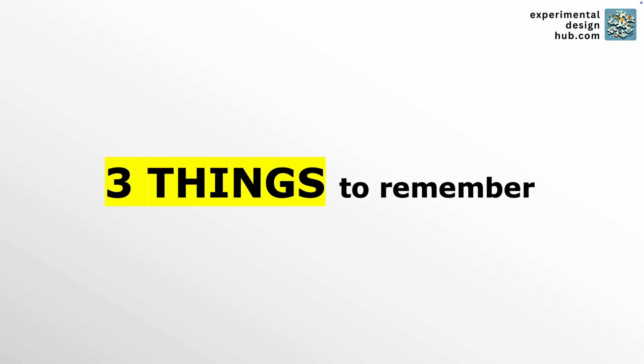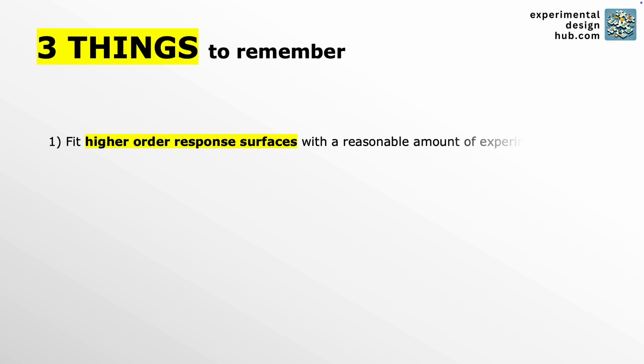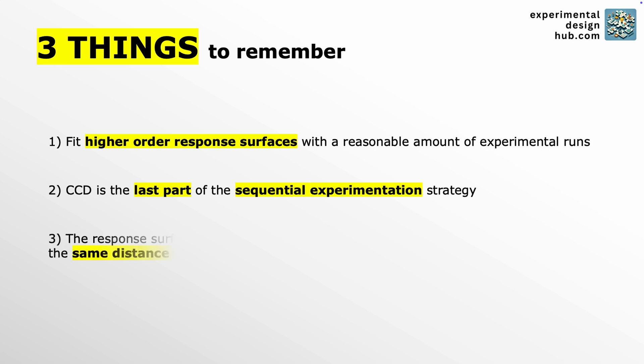Alright, three things to remember from this rather short video about central composite design. First, a central composite design allows you to fit quadratic or cubic response surfaces with significantly less experimental runs as in any three-level factorial design. Second, you never start with a central composite design, but get there eventually after a sequence of other experimental designs that you used before, but did not get a satisfactory fit of your response surface. And third, the distance of the axial points from the center of the design should be chosen that all the design points, factorial and axial points, have the same distance from the design center to ensure equally reliable predictions within the area of interest.